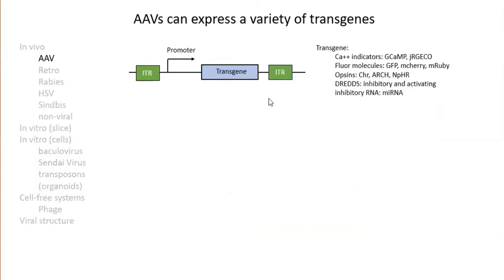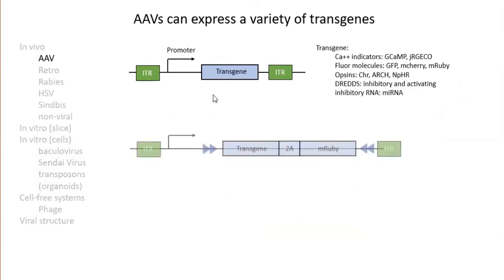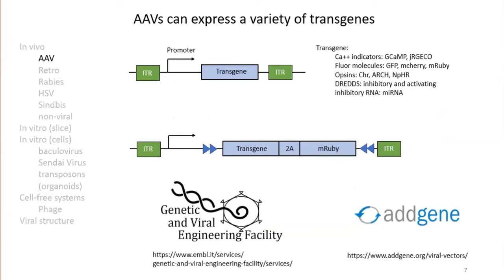AAVs can deliver a variety of cargo and transgenes. They're also CRE-inducible, meaning they can carry transgenes inducible by the CRE recombinase, which is usually in the mouse line labeling a particular cell type. It's very convenient to order AAVs from many facilities, including EMBL's own genetic and viral engineering facility, as well as Addgene. These facilities often provide better titers and better deals for custom constructs not in common catalogs.